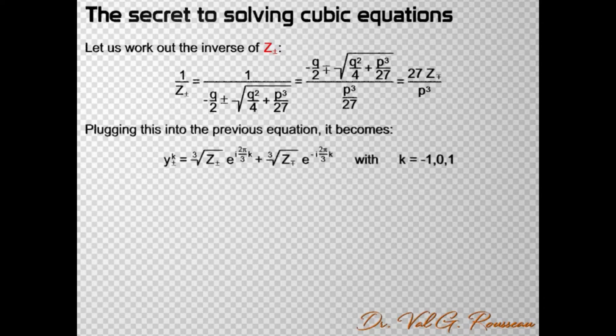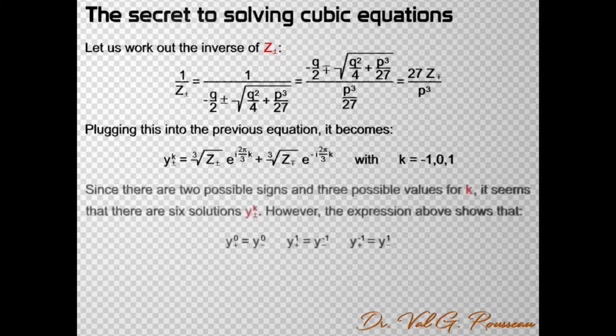y± is equal to the cube root of z± times the exponential with a plus sign plus the cube root of z∓ times the exponential with a minus sign. Now, because this expression is symmetrical, it is easy to see that we have three pairs of identical solutions.